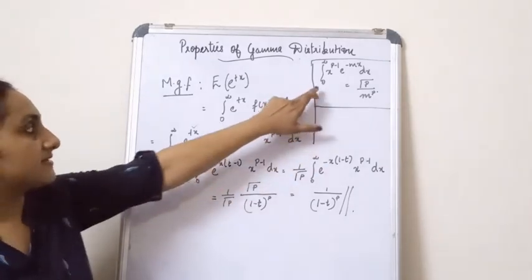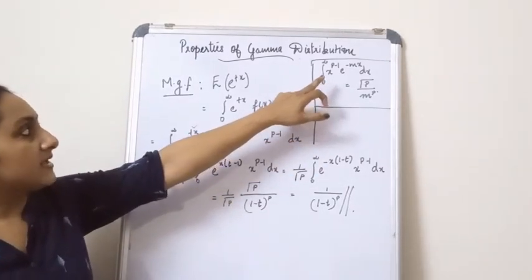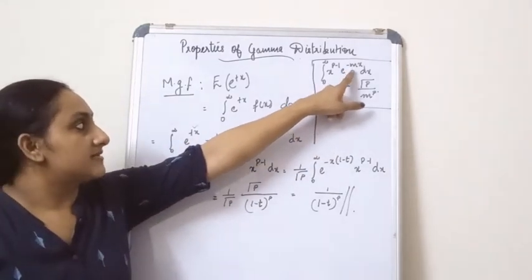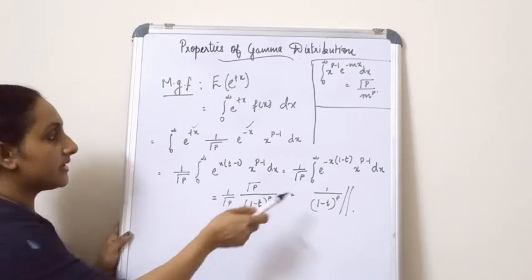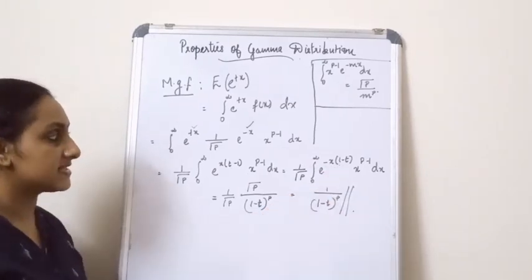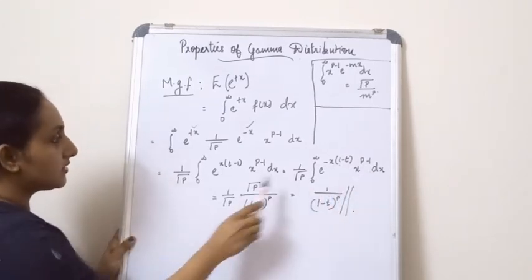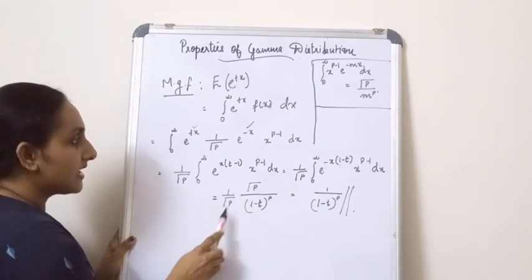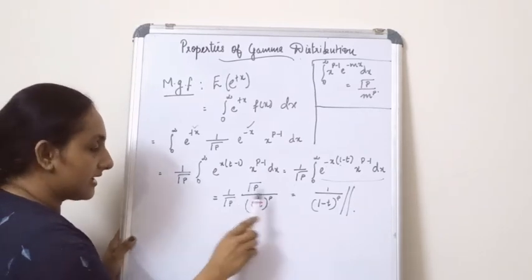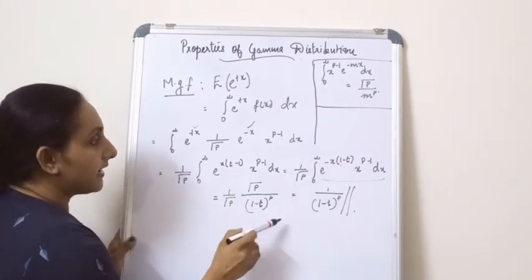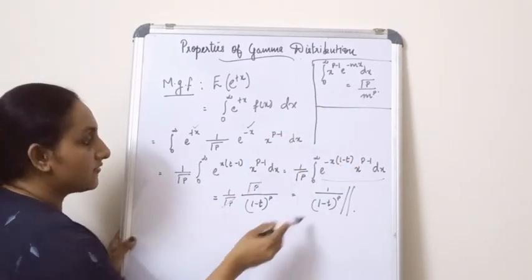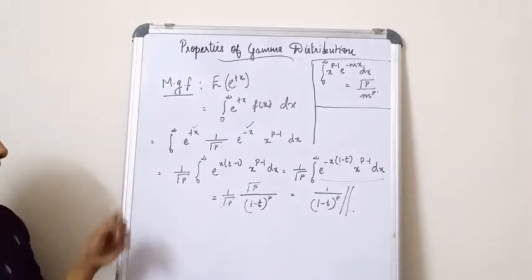Using the result that the integral from 0 to infinity of x^(p−1) e^(−mx) dx = Γ(p)/m^p, I bring the integral into this form. Taking a negative sign outside, I get (1−t) inside the brackets, giving x^(p−1) e^(−(1−t)x) dx. Comparing with the standard result and substituting m = (1−t), the (1/Γ(p)) and Γ(p) cancel, giving the final MGF as 1/(1−t)^p.